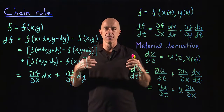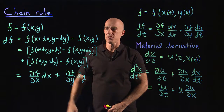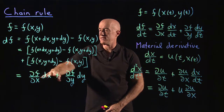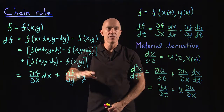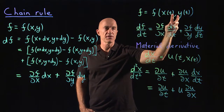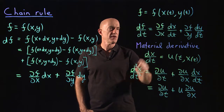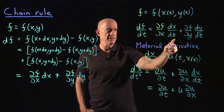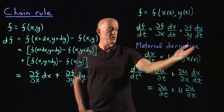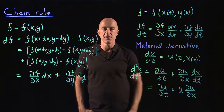To summarize: the chain rule for multivariable functions of more than one variable. The total differential df equals (∂f/∂x)dx plus (∂f/∂y)dy. If f is a function of both x and y, and x and y are functions of time, then df/dt equals (∂f/∂x)(dx/dt) plus (∂f/∂y)(dy/dt). This is the chain rule. An application is computing the first two terms in the Navier-Stokes equation, called the material derivative.